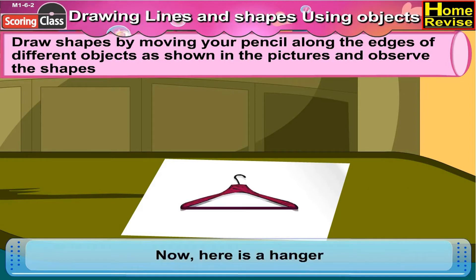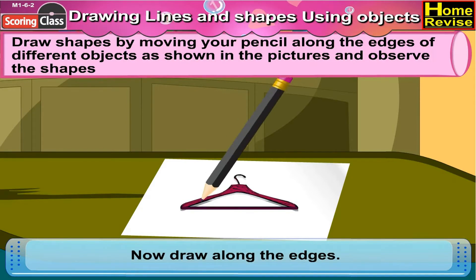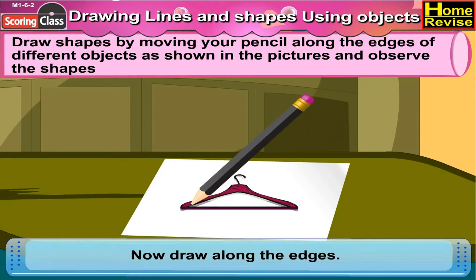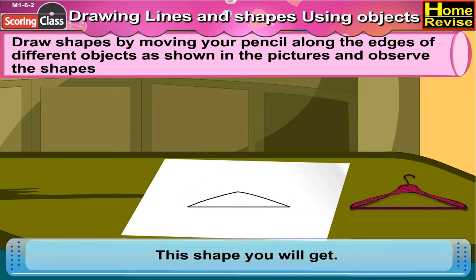Now here is a hanger. Place it on a sheet of paper. Now draw along its edges. This is the shape you will get. Interesting, no?